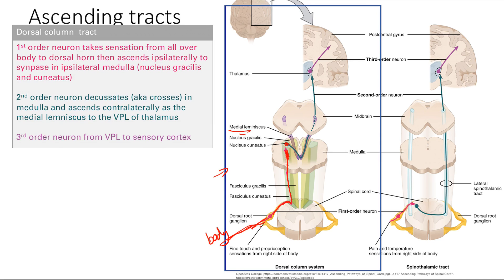The second neuron then crosses — this is important — it decussates in the medulla of the brainstem and ascends on the opposite side as the medial lemniscus. It goes all the way to the thalamus, specifically the VPL — the ventral posterior lateral nucleus of the thalamus. From the thalamus, this sensory signal goes to the sensory cortex. So if sensation is on the right side of the body, it ascends the right side of the spinal cord and then crosses at the medulla to reach the opposite side of the brain.